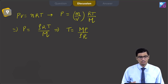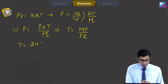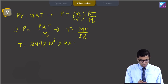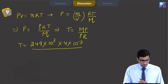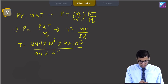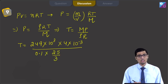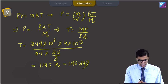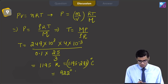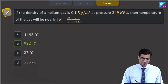Now we substitute the given values: T = (249 × 10³ × 4 × 10⁻³) / (0.1 × 25/3). On solving, we get a value of 1195 Kelvin, which is equal to 1195 − 273 = 922°C. Hence the correct answer is option B, that is 922°C.